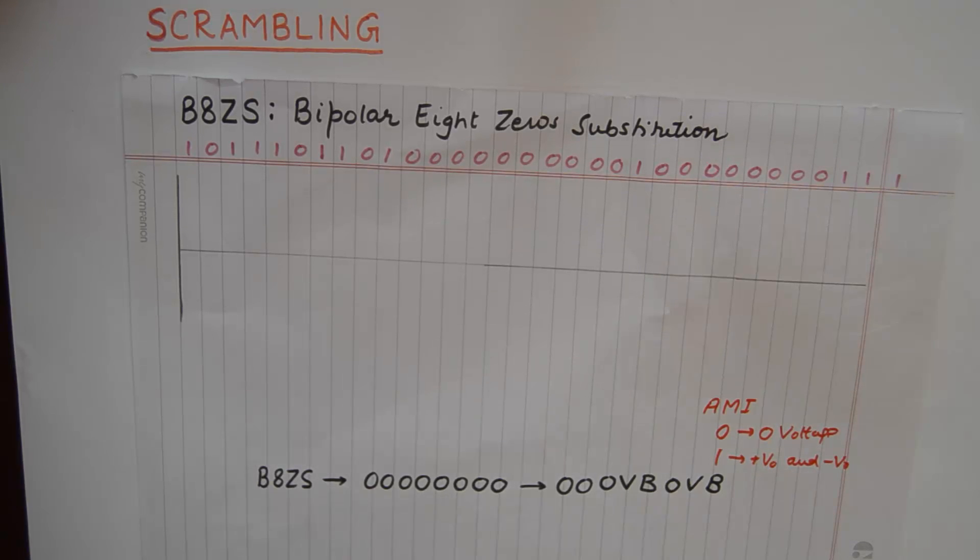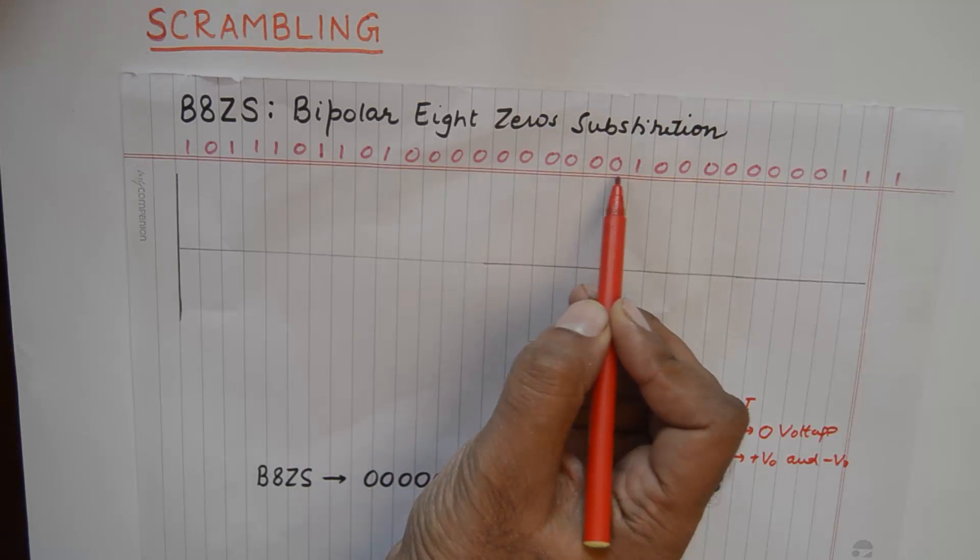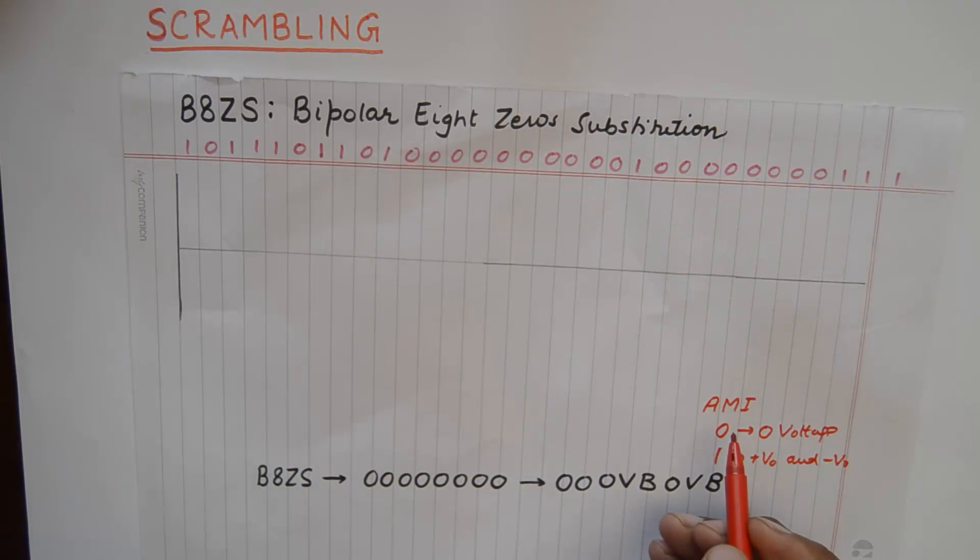If you see these many zeros in the code encoded using AMI, you will get an impression of a DC voltage coming through, which is not true actually. So, timing extraction becomes difficult.